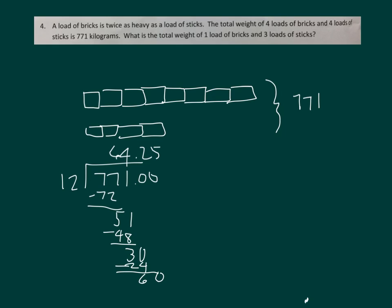Now to be able to figure out our problem, it's asking for one load of bricks and three loads of sticks. So one load of bricks and three loads of sticks, that would be 5 times 64.25. And this is all in kilograms. Multiply that out onto your paper to do your work.